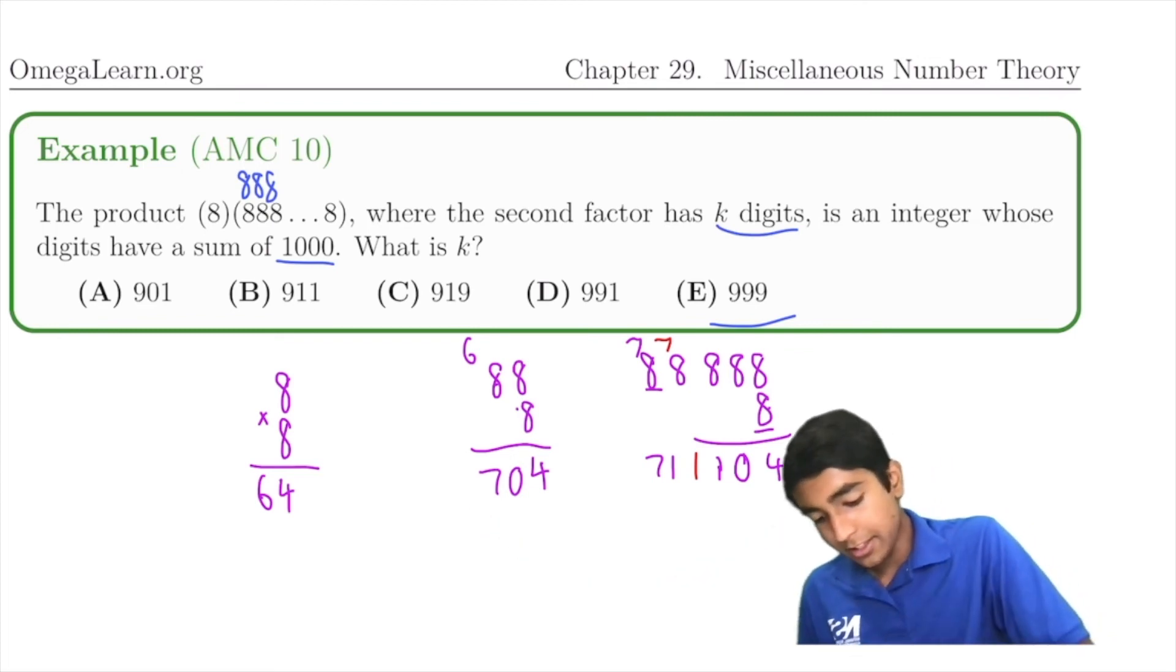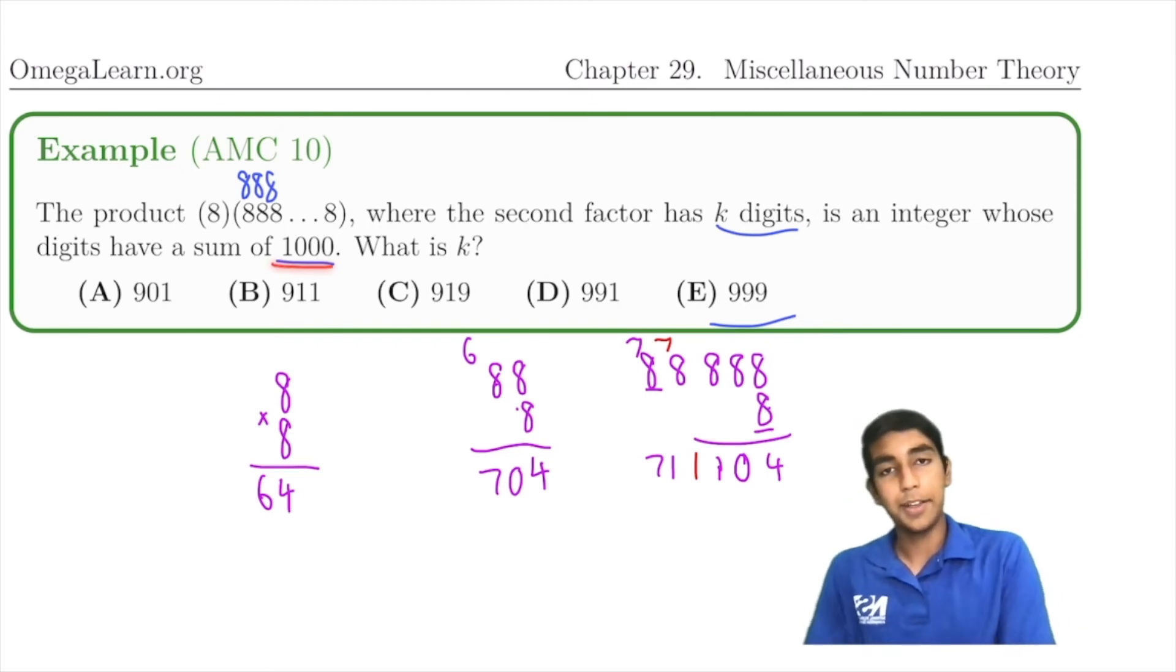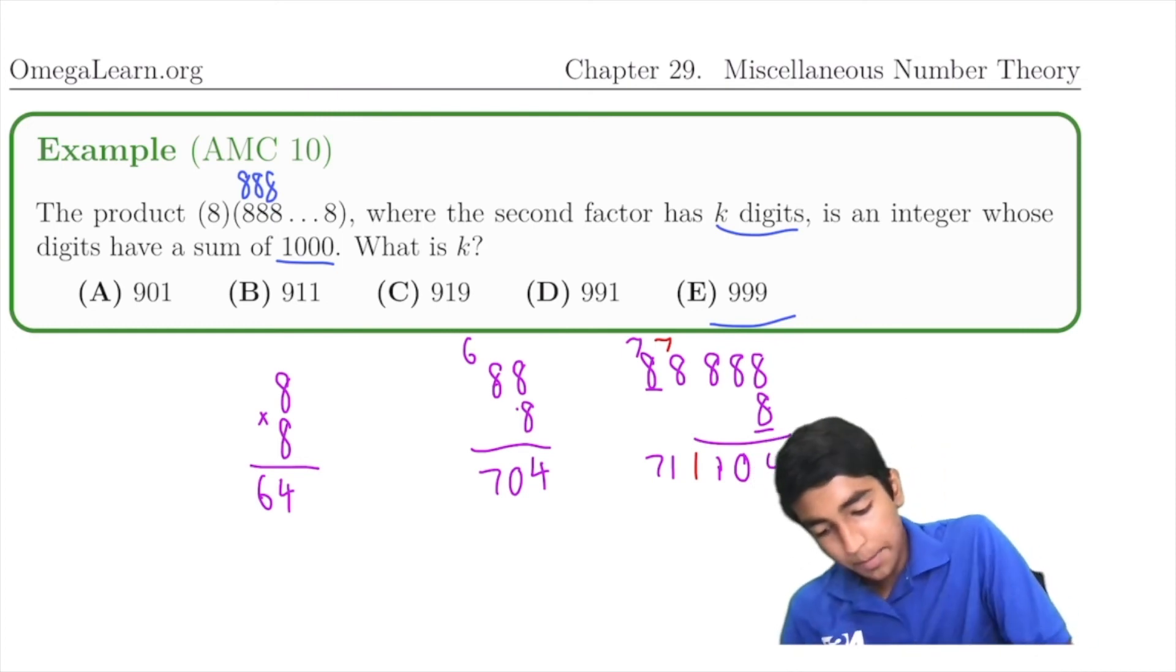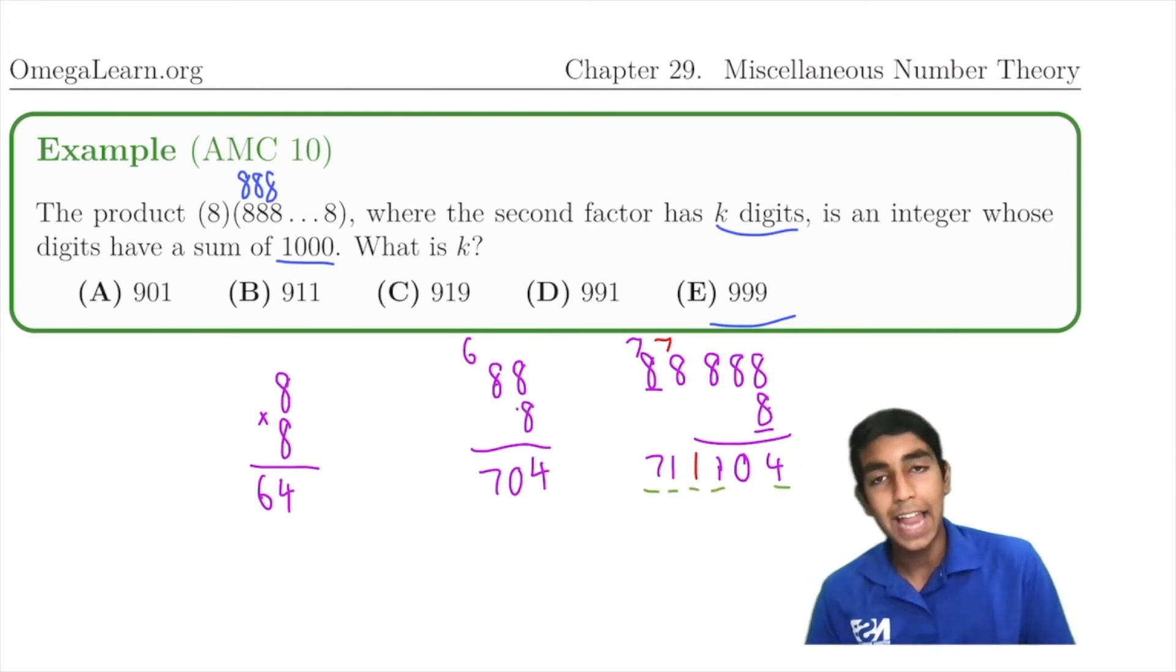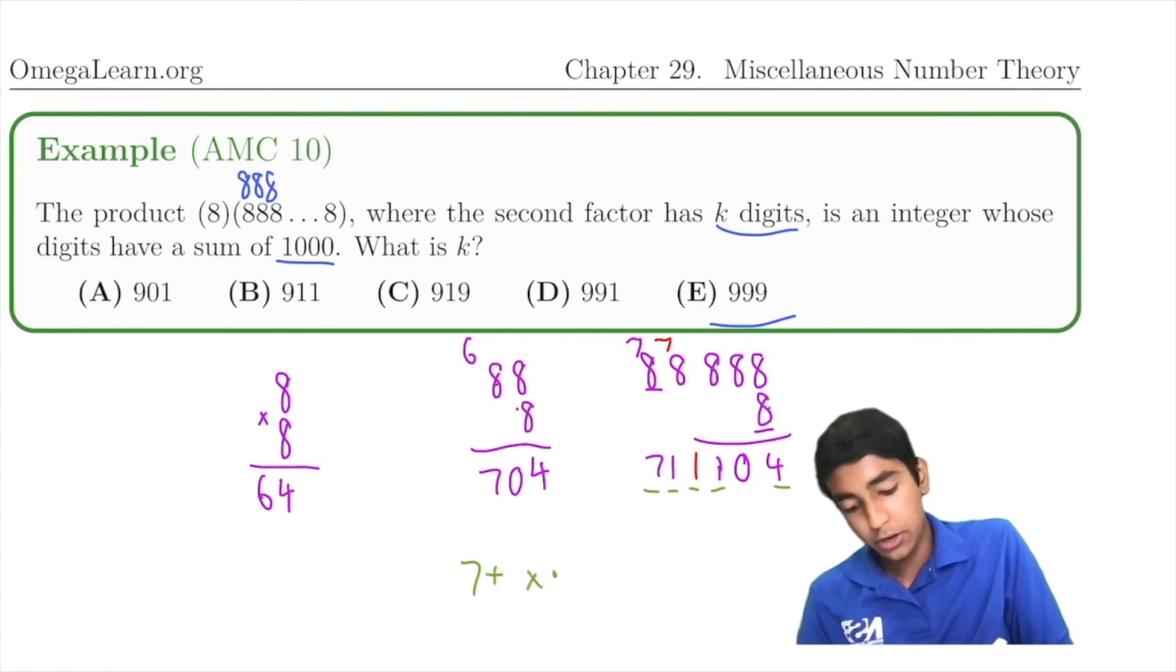So now we're given that the digits have a sum of 1000. So what must be true for the digits to sum to 1000? Well, we've got 7, then a bunch of 1s, then a 0, then a 4 at the end. So 7 + x ones + 4 = 1000.